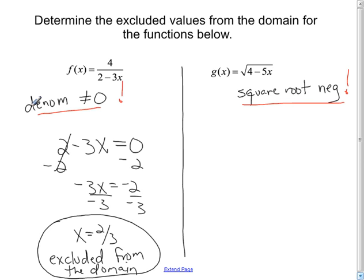Similarly, over here on the right, we have a problem function to some extent. It's a square root function, and we can't square root a negative. So, real simply, let's just say that 4 minus 5x is less than zero, because that's what it means to be negative.